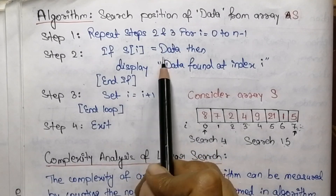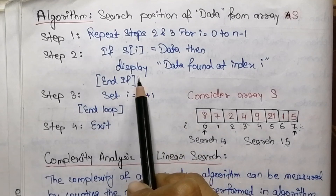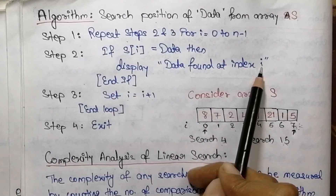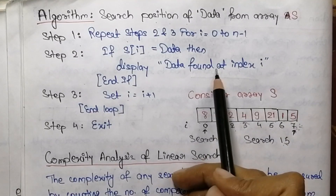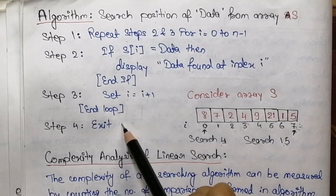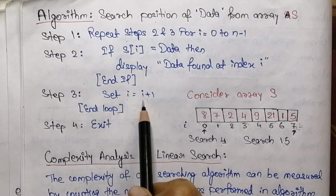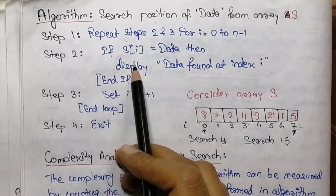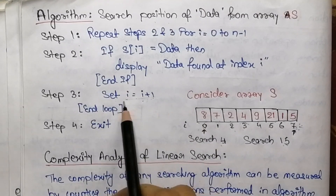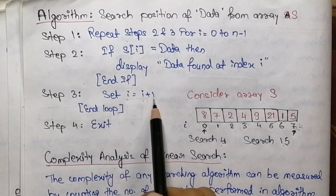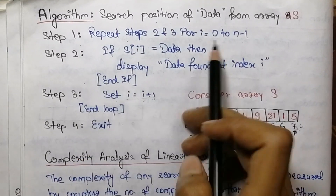In step two, the i-th element of the array is compared with the desired element, that is the data. If both elements are matched, then a message is displayed indicating the position of the desired element found, and we exit from the loop. Step three is executed if the element at the i-th position is not matched with the desired element, and the variable i is incremented.